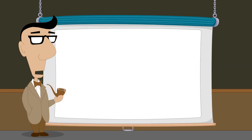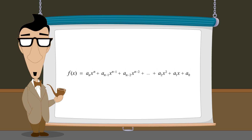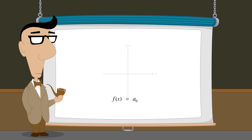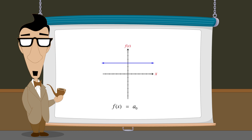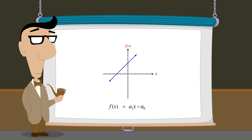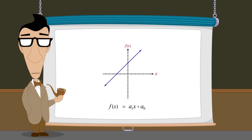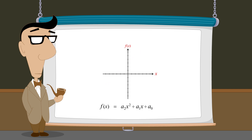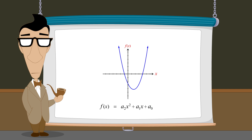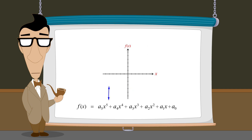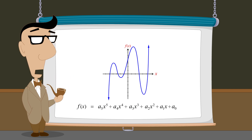As we mentioned in the beginning of this lecture, polynomial expressions can define polynomial functions. A zero-degree polynomial function would be a constant function whose graph is a horizontal line. A first-degree polynomial function would be a linear function whose graph is a sloped line. And a second-degree polynomial function would be a quadratic function whose graph is a parabola. However, the graphs of higher-degree polynomial functions can be much more interesting and varied. In the next lecture, we will see how the shapes of those graphs are affected by the various terms of the polynomial.